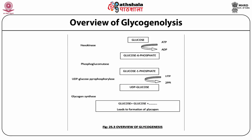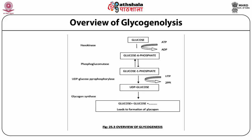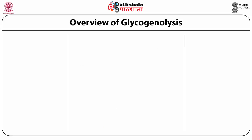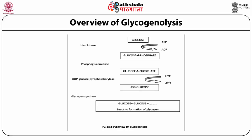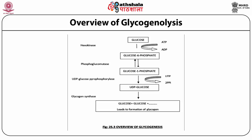Glycogenesis and glycogenolysis occur by different pathways. Glycogen synthesis involves the use of an activated form of glucose. Mammals, fungi and eukaryotic heterotrophic microorganisms use UDP glucose, while bacteria and photosynthetic eukaryotes use ADP glucose. Initially, glucose is phosphorylated to glucose-6-phosphate, a reaction catalyzed by hexokinase or glucokinase. Phosphoglucomutase then catalyzes the isomerization of glucose-6-phosphate to glucose-1-phosphate.